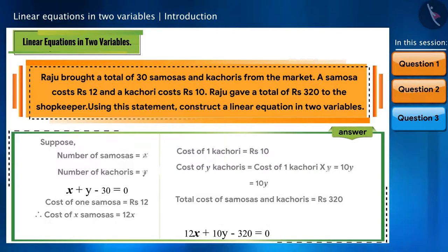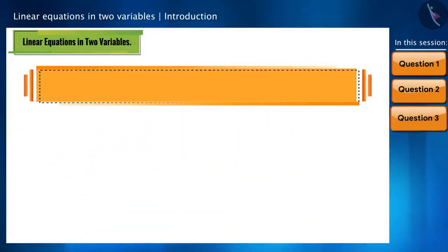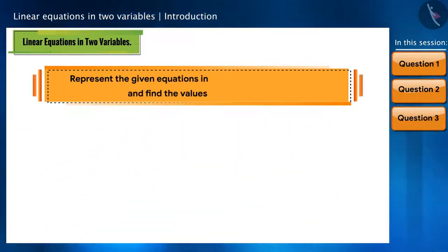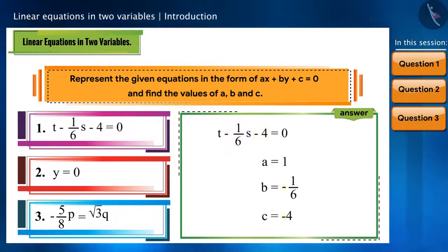Let's go ahead and see the next question. Represent the given equations in the form of ax plus by plus c is equal to zero and find the values of a, b, and c. The equation in the first question is already given in the general form. Here a is equal to 1, b is equal to minus 1 by 6, and c is equal to minus 4. Friends, do not forget to pay attention to the signs here.